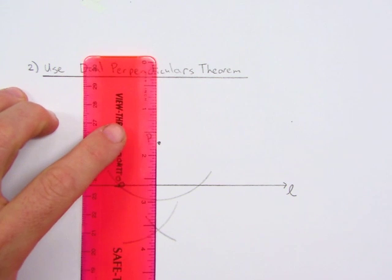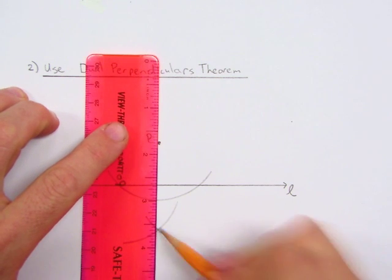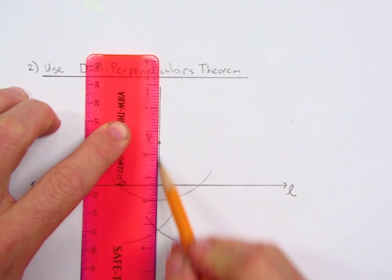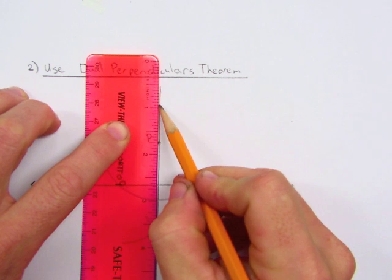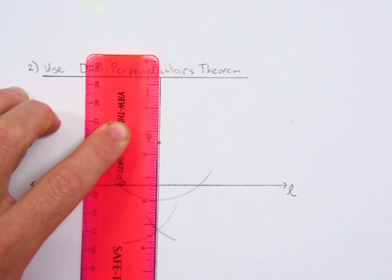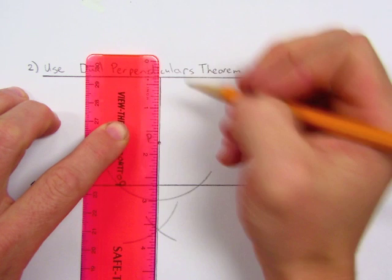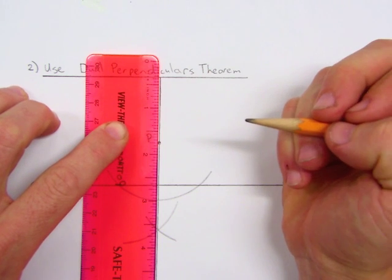And we draw a line through point P and this intersection. Here's where I like to make sure I go far enough above point P so I can do my next perpendicular line.